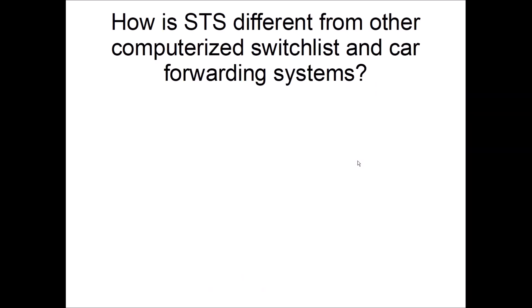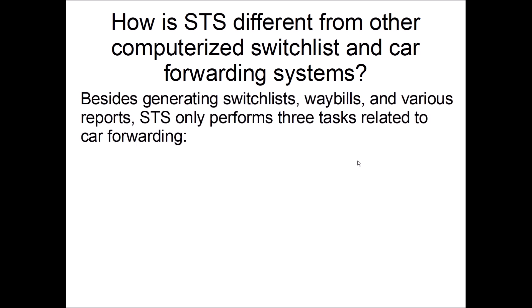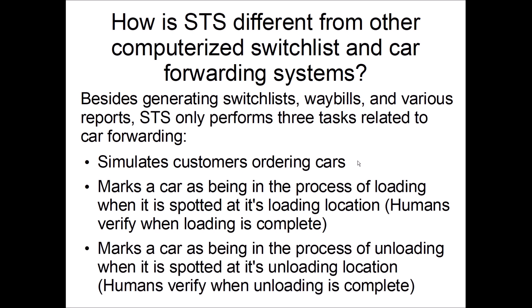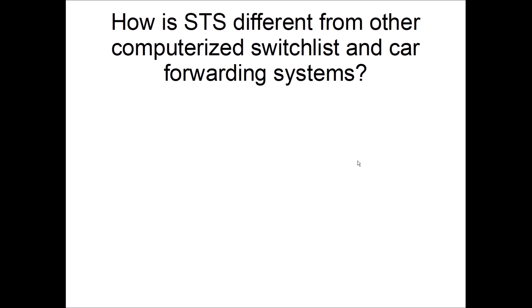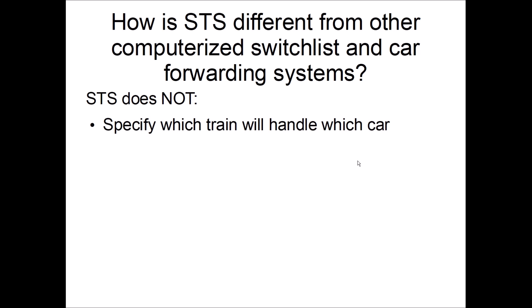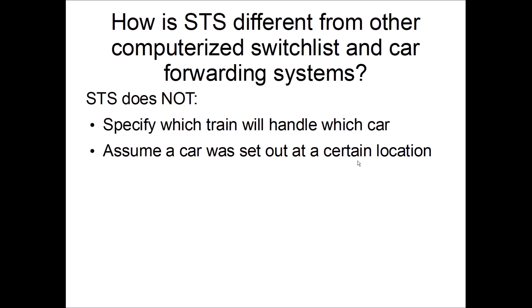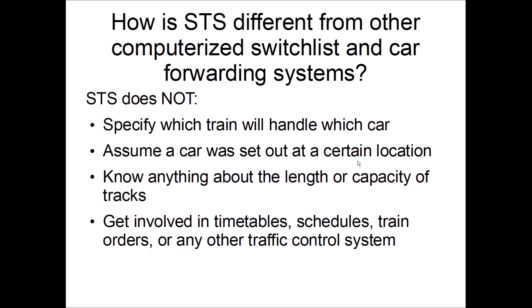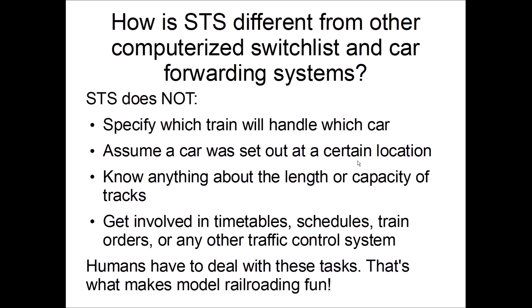So how does STS differ from other computerized switch lists and car forwarding systems? It only does basically three things related to car forwarding: it simulates customers ordering cars, simulates a customer starting to load the car, and simulates a customer starting to unload the car. Humans still have to complete those last two tasks. STS does not assign cars to trains — humans have to do that. It does not assume a car was set out where it was supposed to be; humans have to tell STS where cars were set out. STS doesn't know anything about track lengths or capacity, and it has nothing to do with timetables or schedules — humans have to take care of those.